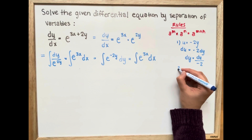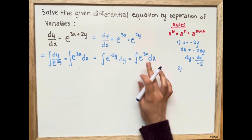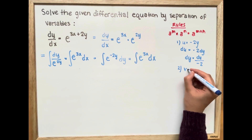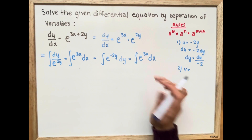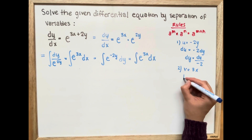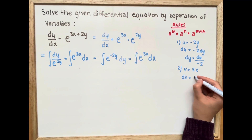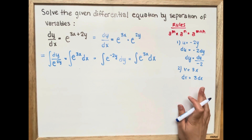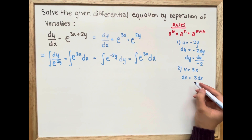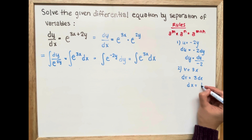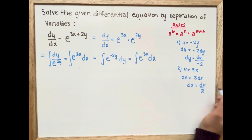We're going to do the same thing with our second exponent. We're going to set v equal to 3x. We take the derivative of v, and that's going to be 3 times dx. Rewriting this in terms of dx, dx is equal to dv over 3.